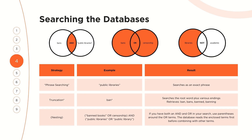First, we'll want to combine our keywords using Boolean operators: AND, OR, and NOT. When we combine terms with AND, that tells the database we only want articles that contain both keywords — not just one or the other, they both have to be present in a single article. When we combine our keywords with OR, like synonymous terms such as bans or censorship, that tells the database we want articles that contain either keyword. They can be in the same article, but they don't have to be, so this will expand our results.